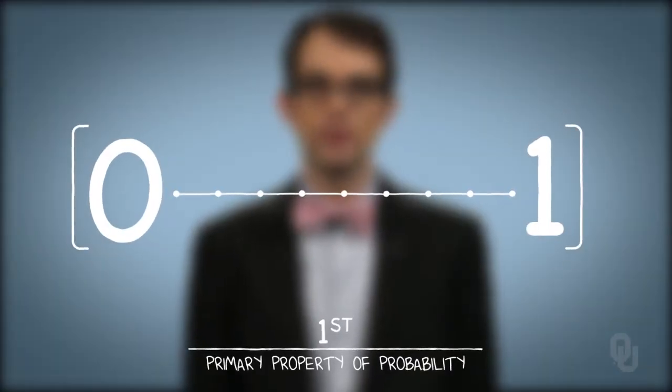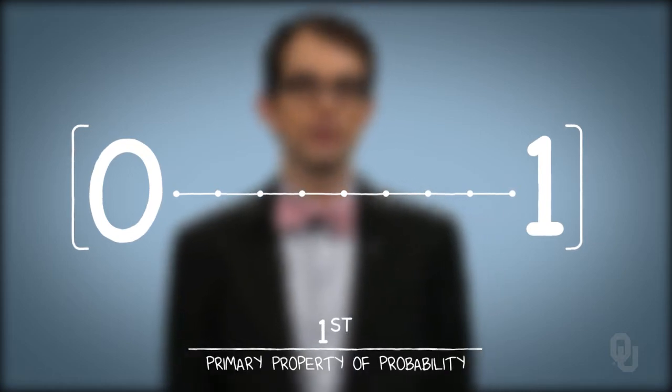The first is that the probability of an event lies on 0 and 1. That's inclusive of 0 and 1, though probabilities of 0 and 1 tend to be rare in the real world.